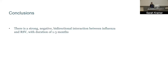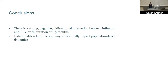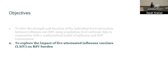The conclusions of objective one are: we found evidence of a strong, negative, and bidirectional interaction between influenza and RSV, such that infection with one virus tends to almost completely block infection with the other. This lasted about three months for flu on RSV and one month in the other direction. We also found that the individual-level interaction may substantially impact population-level dynamics.